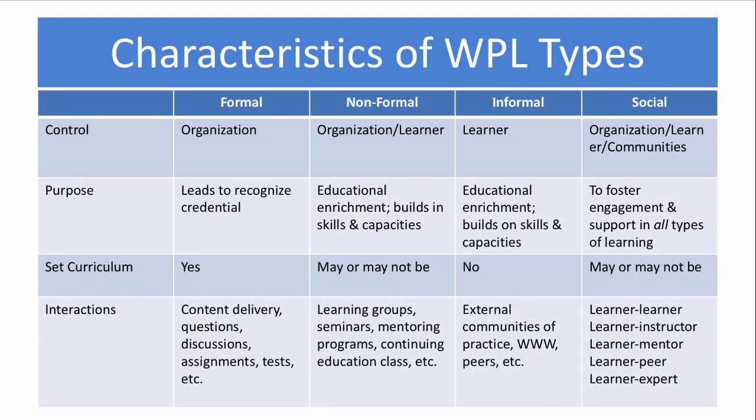This table illustrates the characteristics of formal, non-formal, informal, and social workplace learning. Formal workplace learning is controlled by the organization. Its purpose is to lead to a recognized credential. The curriculum is set in advance, and potential interactions include content delivery, questions, exercises, discussion, assignments, tests, etc.